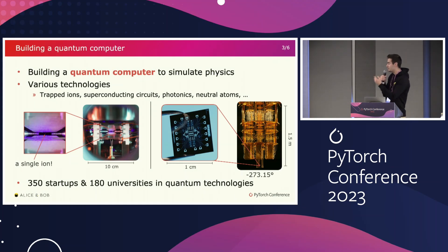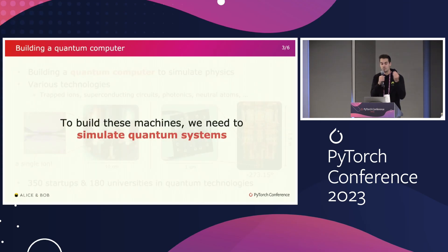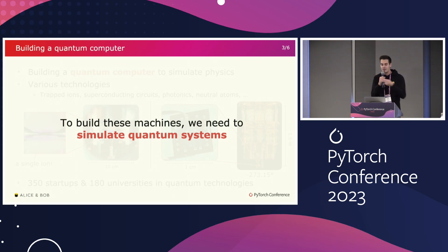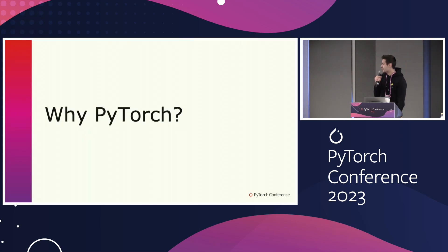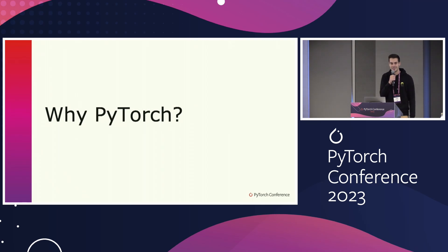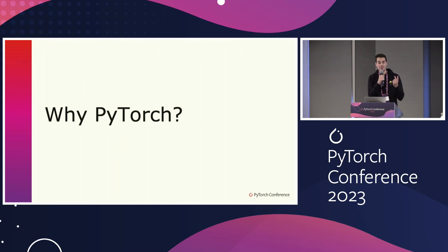However, to build this quantum computer, we have a problem: we need to simulate these small quantum systems. We need to simulate trapped ions and superconducting chips to calibrate and control them. So we are a little bit back to Feynman's problem of simulating quantum systems. So why PyTorch? Why is a quantum physicist coming to a supposedly machine learning-related conference? The reason — not to get the PyTorch conference socks, even if they are very cool — is that PyTorch has two main features that are extremely well-suited to simulate quantum systems.